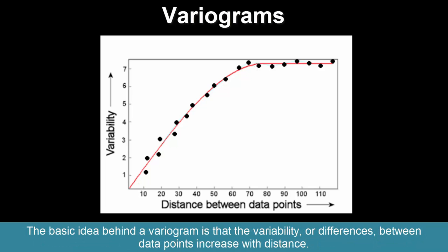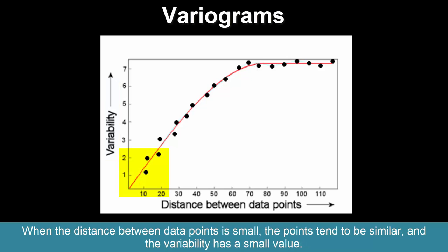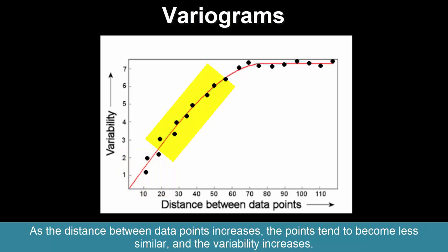The basic idea behind a variogram is that the variability or differences between data points increase with distance. When the distance between data points is small, the points tend to be similar and the variability has a small value. As the distance between data points increases, the points tend to become less similar and the variability increases.